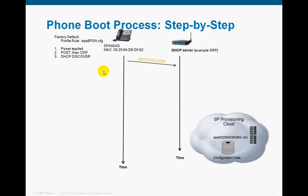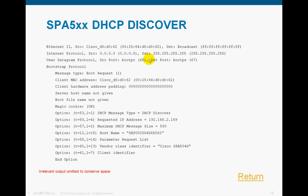Next step: the phone sends out a DHCP Discover on the appropriate VLAN. Here's the Wireshark trace of it. You'll see the phone's MAC address and it's performing a DHCP Discover, requesting the address it had last time. The default host name is SEP followed by the phone's MAC address, and its vendor class ID is a Cisco SPAR 504G.